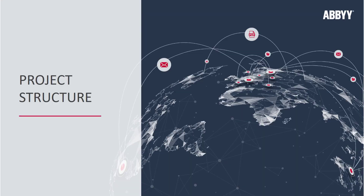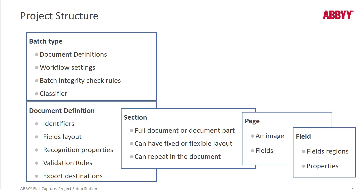A project may or may not contain batch types. If you create a batch type, it will contain document definitions, workflow settings, preprocessing settings, and classification settings. A document definition has to have a means of identifying a document. There are also fields defined, recognition properties associated with those fields, and validation rules so that we know the data is clean. Exports are set up at the document definition level.